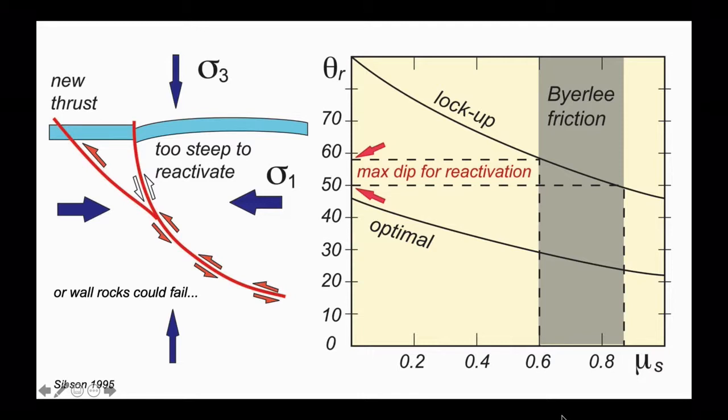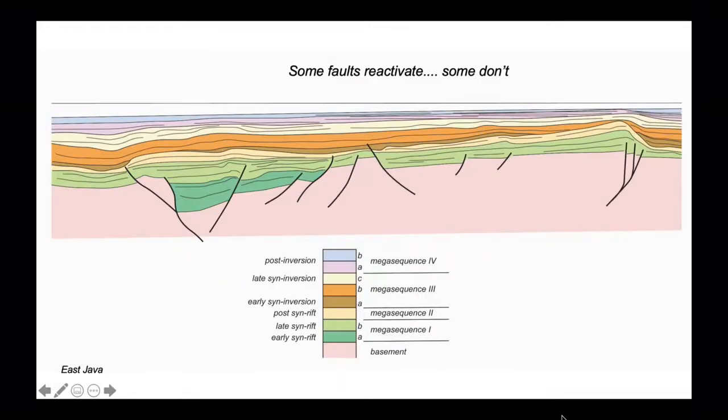Here's another section from offshore East Java, again based on seismic data. Pink basement and then various sedimentary cover rocks on top in the green and tans all the way up to the blue. Let's look across this section and identify which faults reactivate and which don't. We've got a few reactivated inverted normal faults. We've got an array of normal faults that have not reactivated. And we've got a few fault segments that appear to be entirely new thrust or reverse faults.